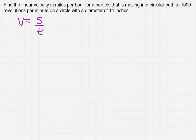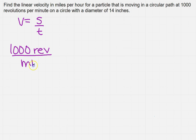It tells me that it is 1,000 revolutions per minute, so I'm going to write that down: 1,000 revolutions per minute. And the last piece is it says the diameter is 14. Now, we don't ever use the diameter — with arc length or anything we use the radius. The radius is half the diameter, so R is going to be 7.